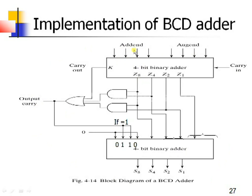Let us take an example: assume the addend is 5 and the augend is 5. You will get the output as 1010, which is 10. Now, 1010 is not a correct BCD value, so we have to correct it by adding 6. Z8 is 1 and Z4 is 0, so the output of the first AND gate is 0. For the second AND gate, Z8 is 1 and Z2 is 1, so its output is 1. Since one OR gate input is 1, the output is 1. So 0110 is given as one operand to the 4-bit binary adder and 1010 is the other operand. Adding 10 with 6 gives the correct BCD representation.